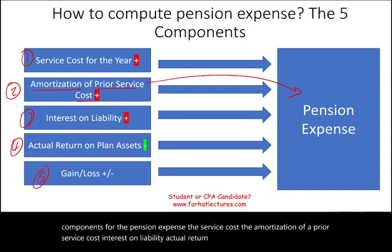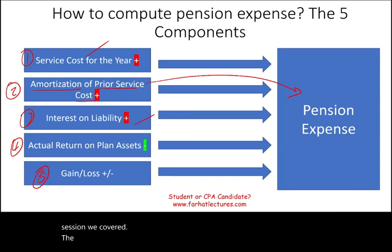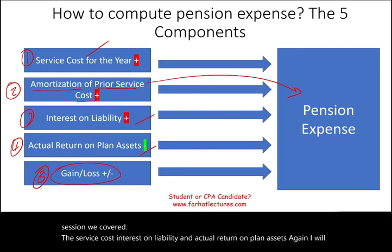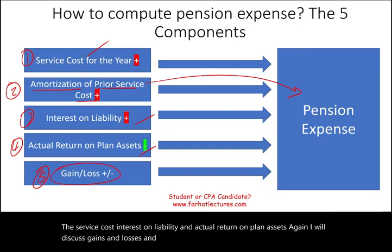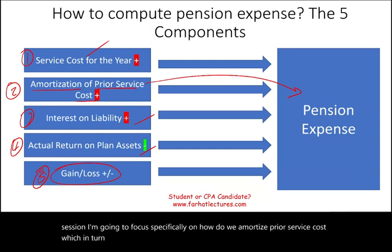In the prior session we covered the service cost, interest on liability, and actual return on plan asset. Gains and losses will be discussed with an example in the next session. In this session I'm going to focus specifically on how we amortize prior service cost, which in turn increases the pension expense.